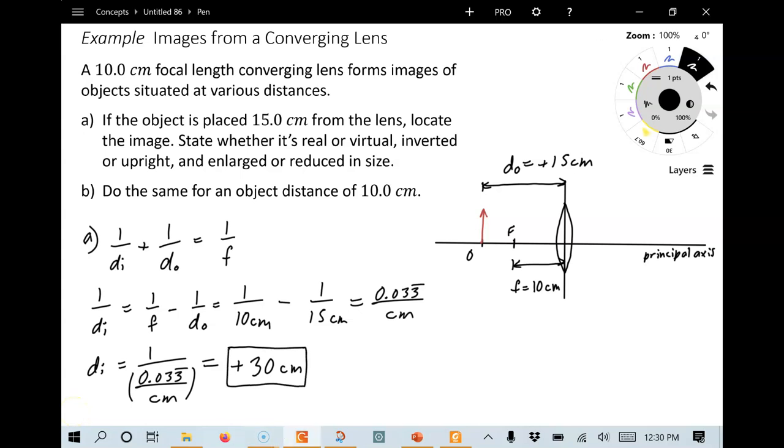Now, I notice this doesn't ask us to calculate the magnification, but I'm going to go ahead and do that. So the magnification of this one, we see we can use this formula, minus di over do, since we just solved for di. So we've got a negative 30 centimeters and a positive 15 centimeters, which is going to give us minus 2.0. So there's our magnification there.